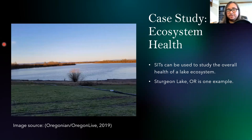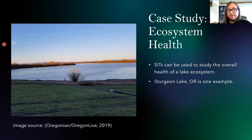Another application is lake health. We can use isotopes and evaporation rates to determine the health of a lake ecosystem and whether it's stagnating. One example is research that I and my mentor are actually doing at Sturgeon Lake, which is on Sauvie Island just northwest of Portland, Oregon. We're using stable isotope tracers to track evaporation rates, how much water is entering the lake from different tributaries, and the overall residence time of the lake — a quantification of how long different water molecules stay in the body after they enter it.